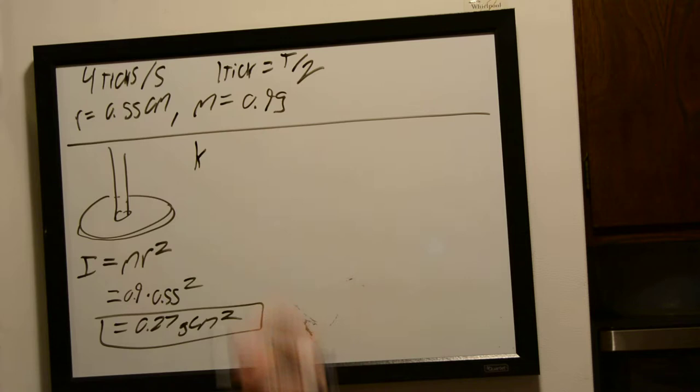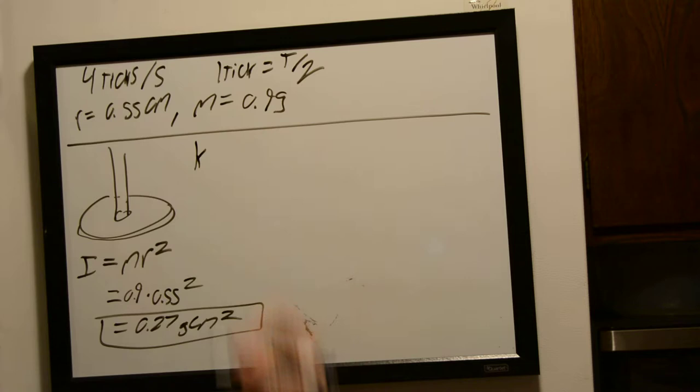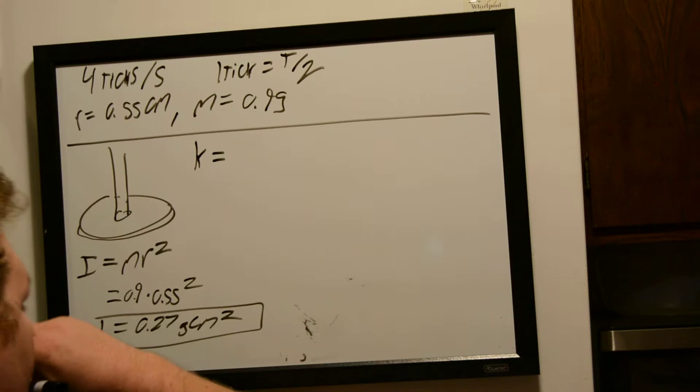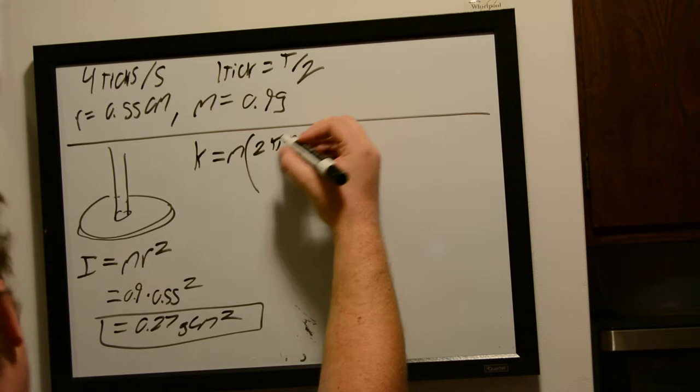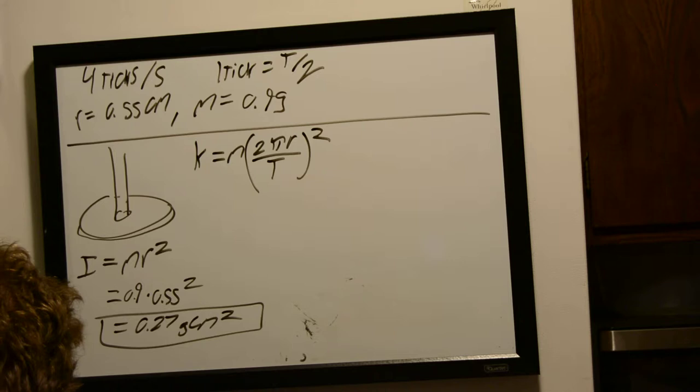So, the torsion constant, like the spring constant, is given by k, and the general torsion constant equation is given by mass times 2 pi r over the period squared. Alright, so then for that, we can just really plug and chug.